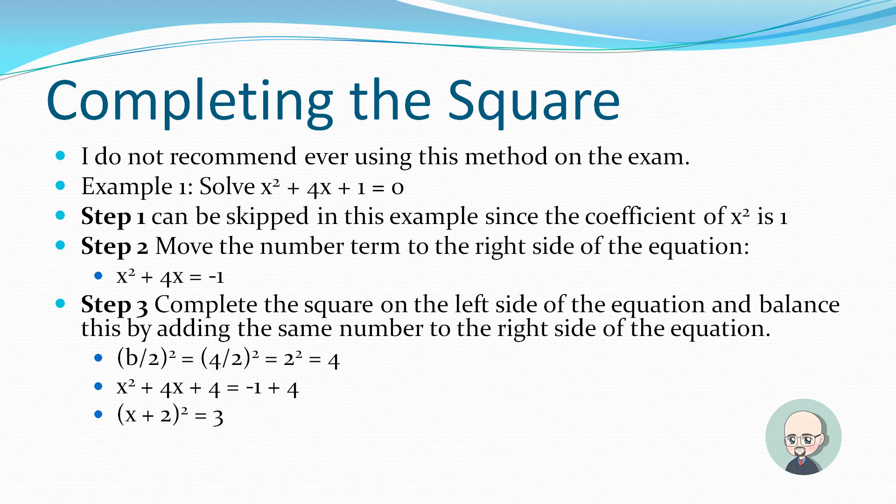The first method is completing the square. I don't recommend using this method on the exam — it usually takes at least twice as long and is much more difficult. Step one can be skipped in this example since the coefficient of x squared is one.